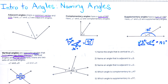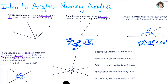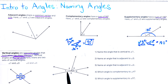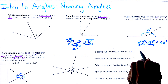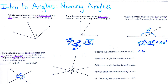Now that we've talked about these four different kinds of angles, let's identify some angles in the given picture. There are five angles marked. The first question says: name the angle that is vertical to angle one. Here is angle one, and with two intersecting lines, the vertical angle is right across from it — that would be angle four.